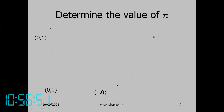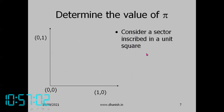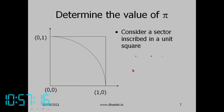A more complex example: determining the value of pi using simulation. Consider a sector inscribed in a unit square, with corners at (0,0), (1,0), (0,1), (1,1). Pi divided by 4 equals the area of the sector divided by the area of the square — this is one quarter of a circle. This is one quarter of a square with side 2.